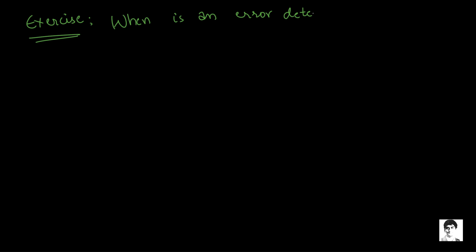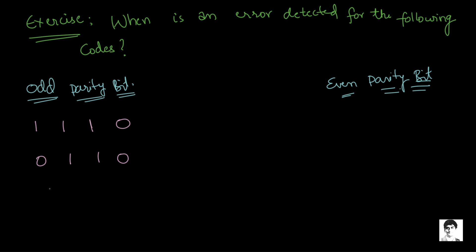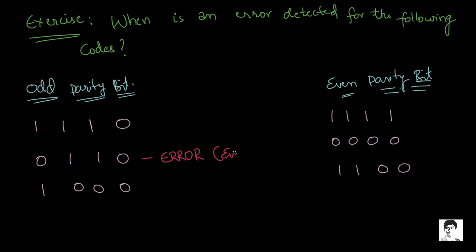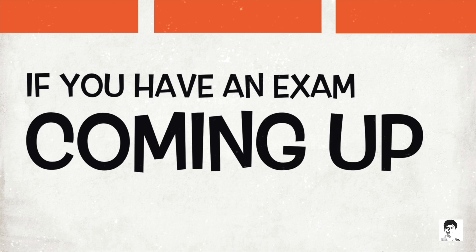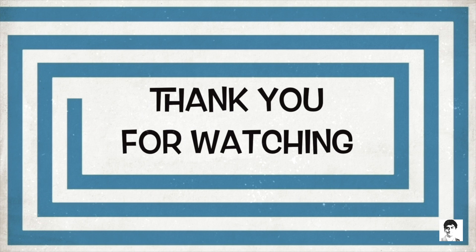I'd like you to do a quick exercise: check for yourself in which of the following binary words an error would be detected when using odd parity and when using even parity. Give the video a quick pause and check. When using odd parity, the second binary word would give an error because the number of ones is even. When using even parity, none of these would produce an error because in all cases the number of ones is even. For odd parity, the first and third words will not give any error because the number of ones is odd. That is all for this video — if you have an exam coming up, I wish you all the very best. Hope you found this video informative, thanks for watching!